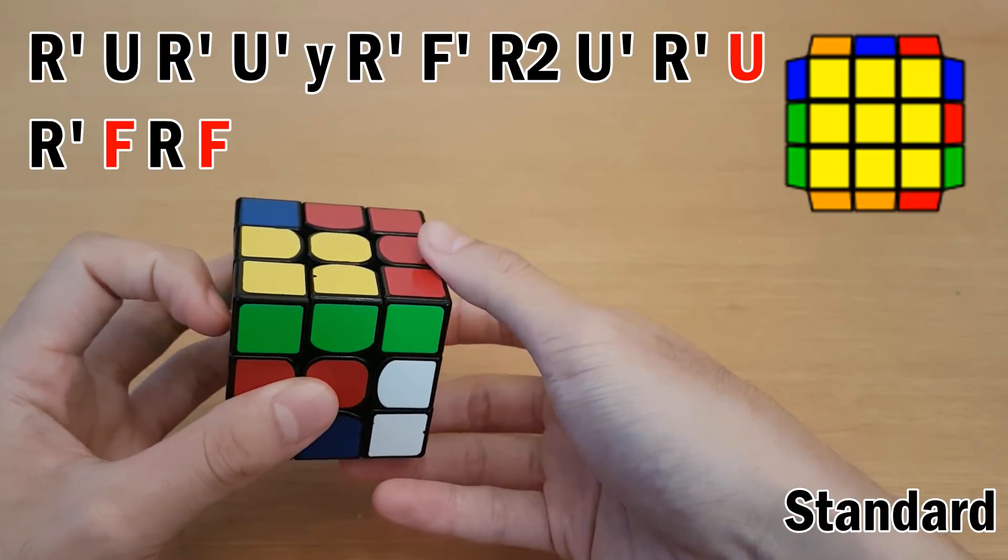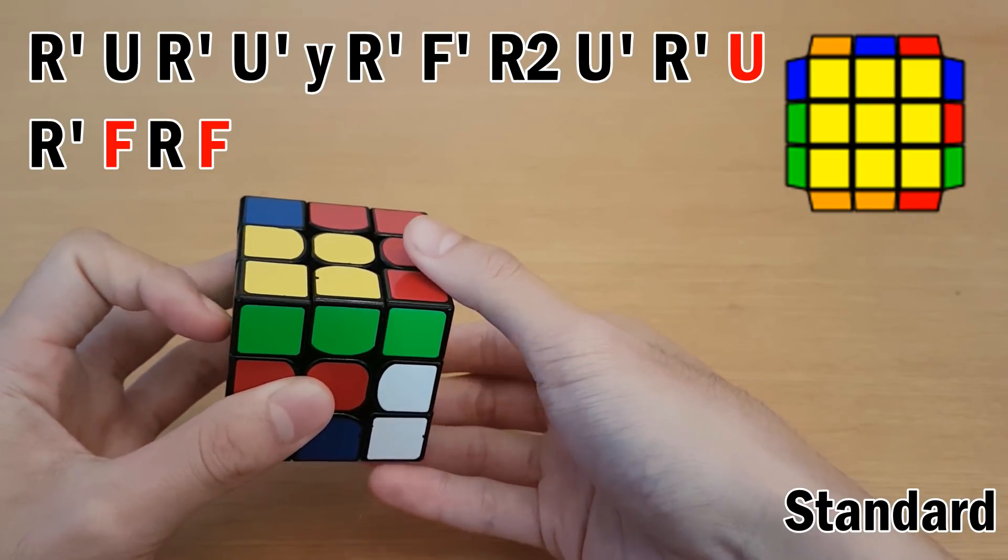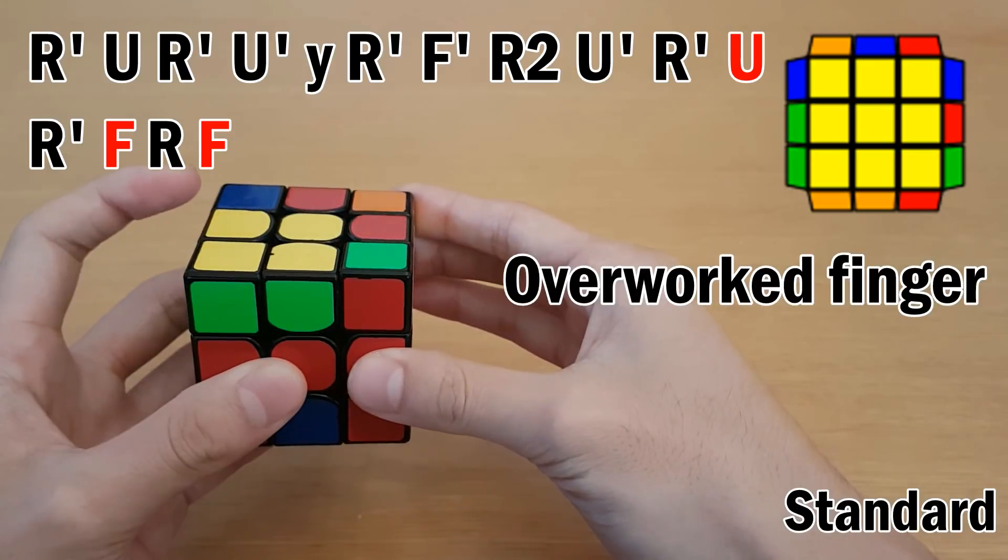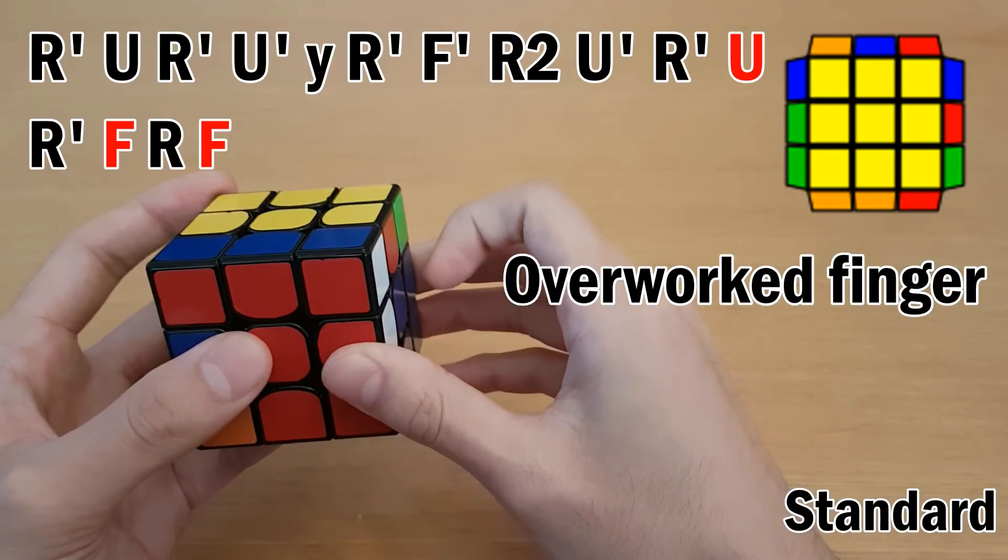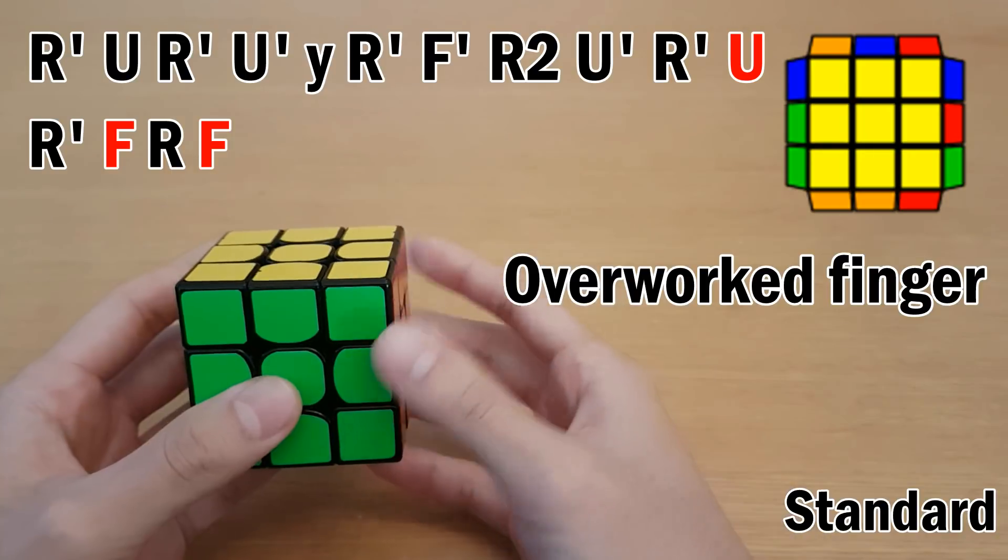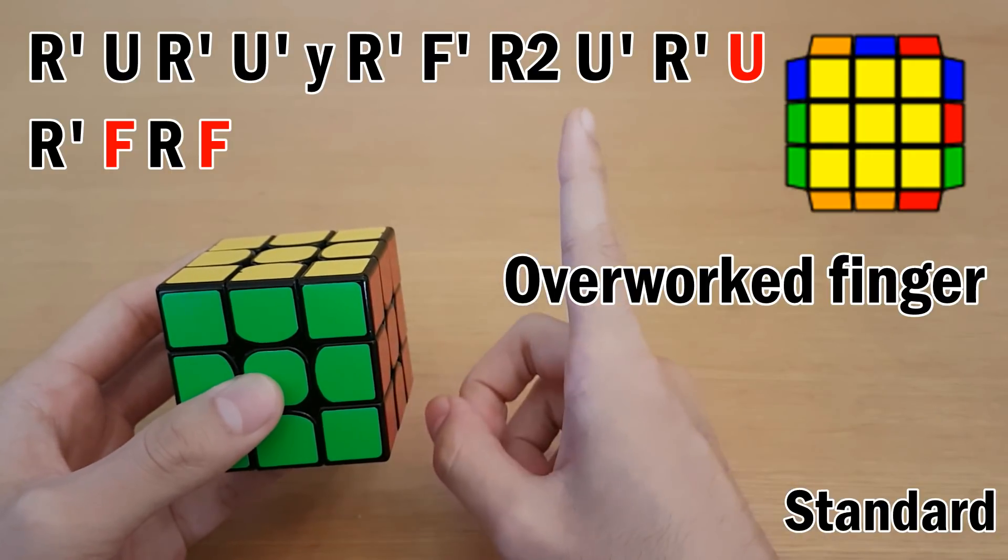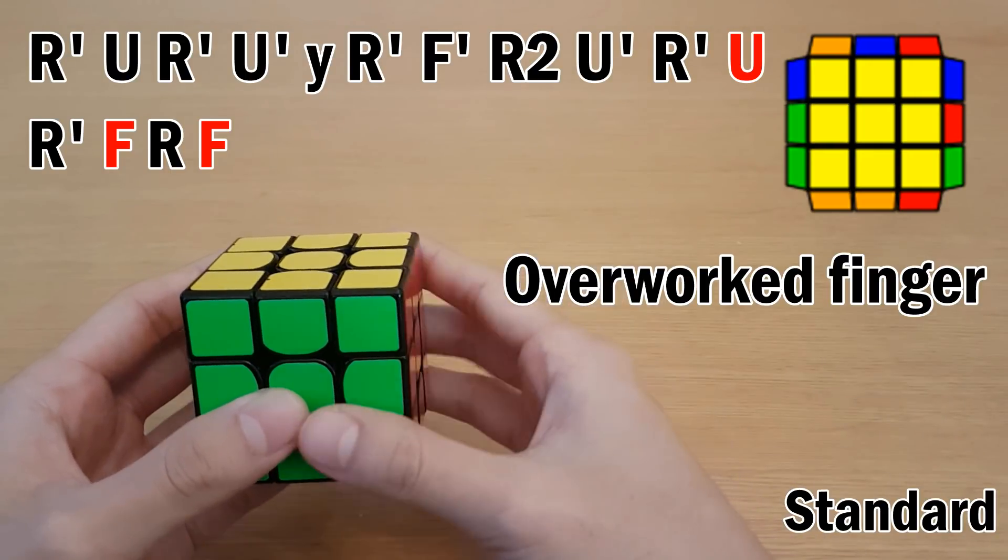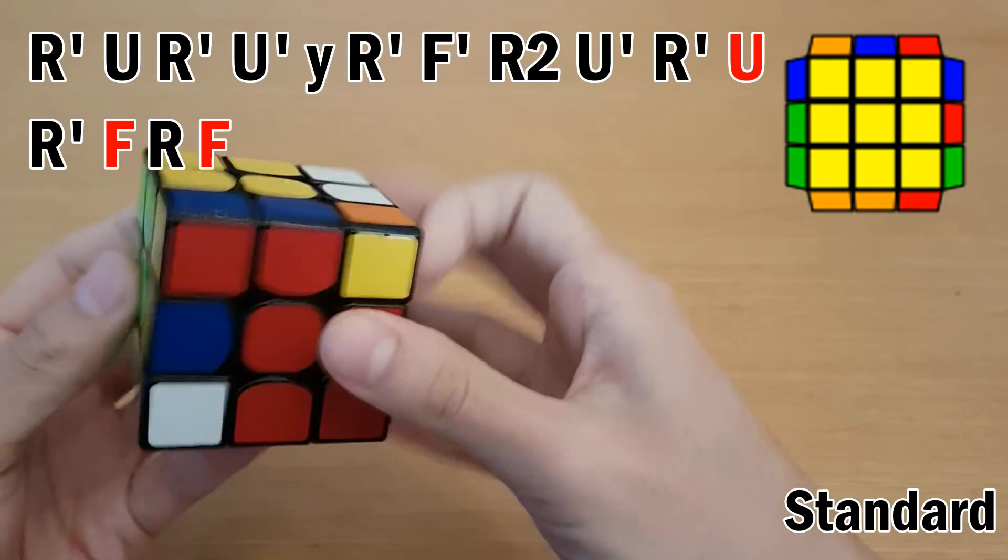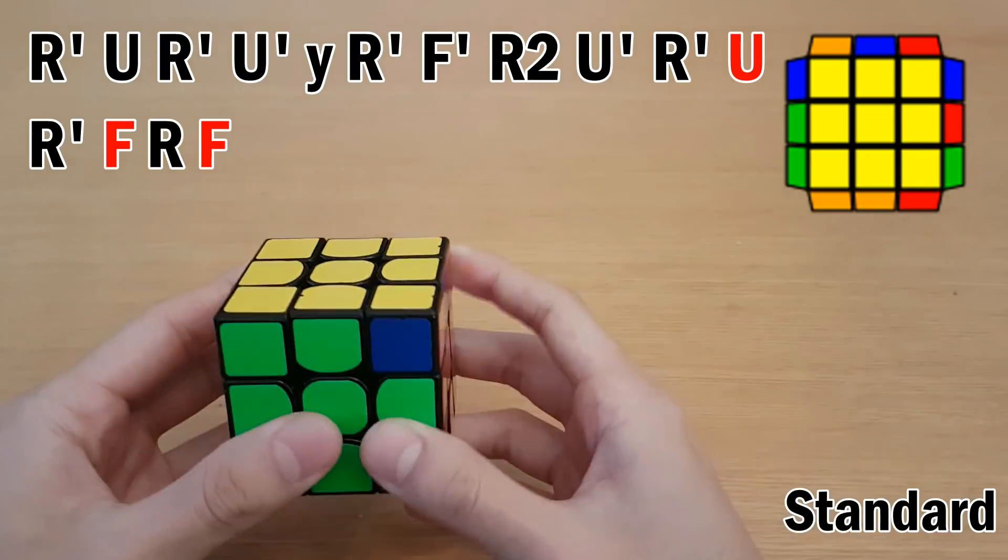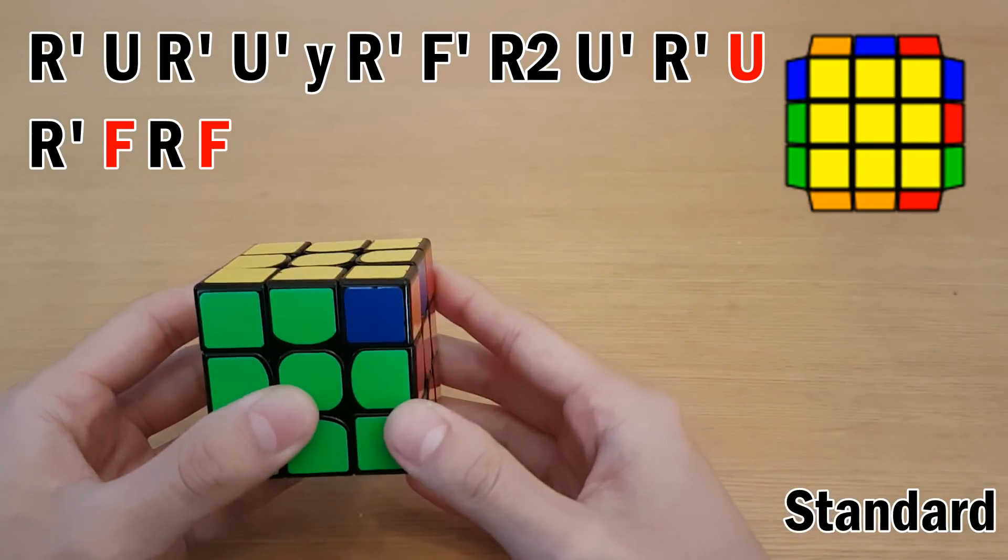U'. Now here is the most important part of the V-perm, where it's R' U, R' F, R F. So if I'm going to do that fast using only my right index finger for all three of those moves, here's what it would look like. So it can be pretty fast, but it could also be a lot better.